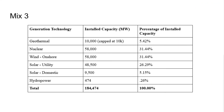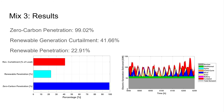Our original idea for Mix 3 incorporated equal amounts of geothermal, nuclear, solar, and wind with lithium-ion battery storage. However, research showed the ERCOT region has a geothermal capacity cap of 10,000 megawatts, and Texas already has 33,133 megawatts of onshore wind with an additional 7,000 megawatts planned, so downsizing that infrastructure would be pointless. The mixture was modified to have equal amounts of nuclear, total wind, and total solar. The total installed capacity is 184,474 megawatts with an additional 10,000 megawatts of lithium-ion battery storage. This mixture met the zero carbon requirement at 99.02%, with a renewable penetration of 22.91% and curtailment of 41.66%.